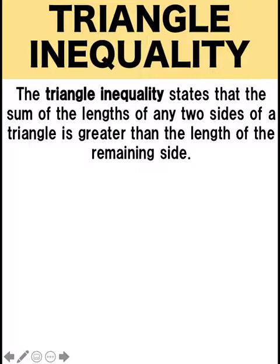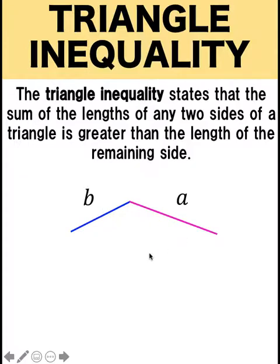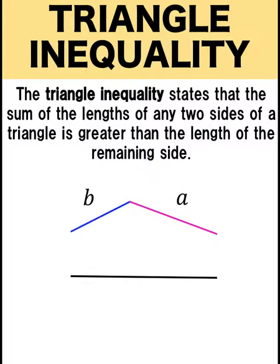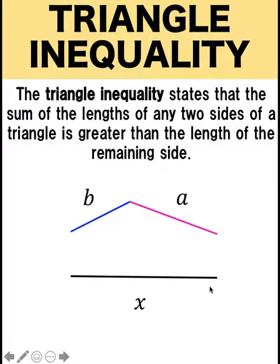The triangle inequality states that the sum of the lengths of any two sides of a triangle is greater than the length of the remaining side. Let's begin by drawing this blue line segment and let the length of this blue line segment be equal to B. Then let's draw this other line segment and let the length of this pink side be equal to A. The value of the third side would depend on the size of the angle between the intersection of sides B and A, and so we can form this third side. Notice that the blue line can be rotated counterclockwise, and the pink side can also be rotated clockwise. Depending on this angle in between these two sides, the value of the third side could assume any value. Let that value be our variable X, to show that the third side could be any length subject to the restrictions of the two sides.